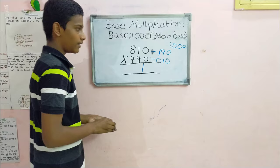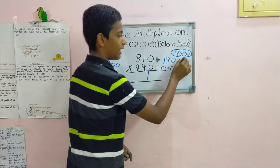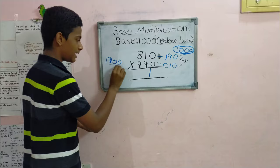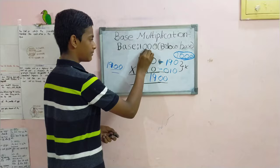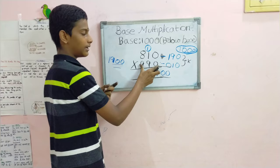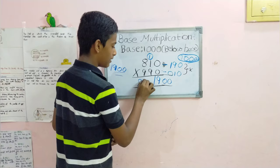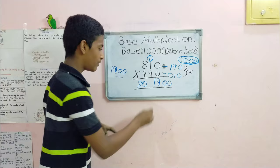For obtaining the right part of the answer, we must multiply these two numbers. By doing so, we obtain 1900. But 1000 only has three zeros, so only 900 should be put here, and 1 must be taken as carry over for the next step. For obtaining the left part of the answer, we subtract 190 from 990 or 010 from 810, as both result in the same answer: 800. Adding the carry over of 1 gives us 801.